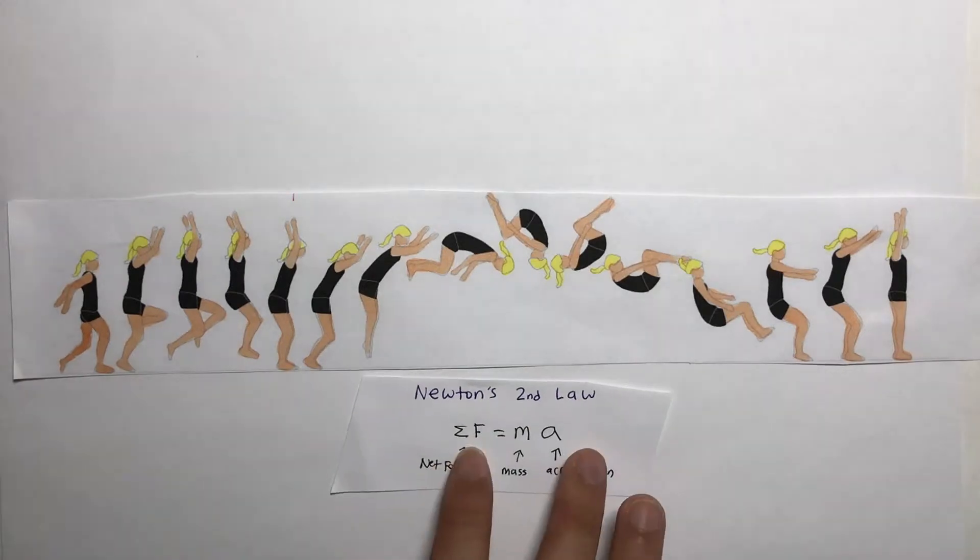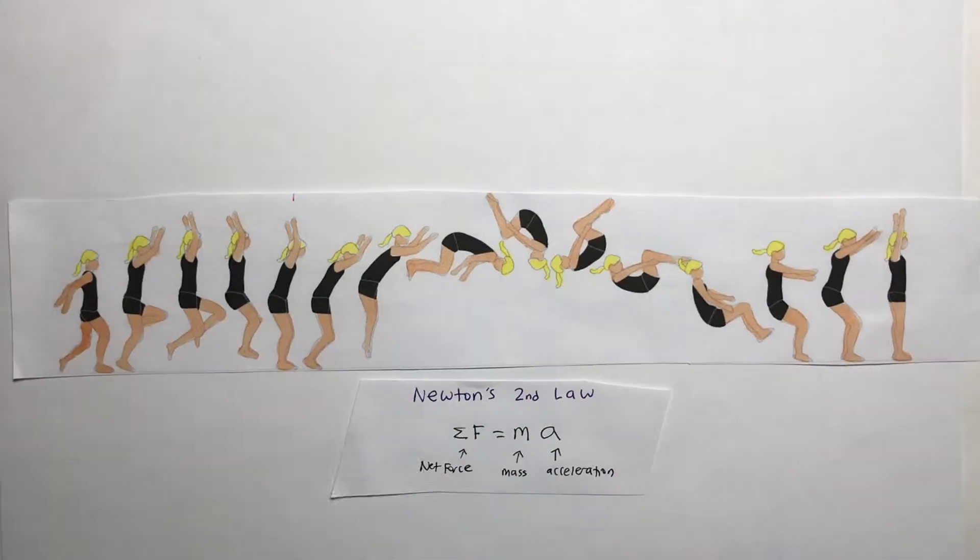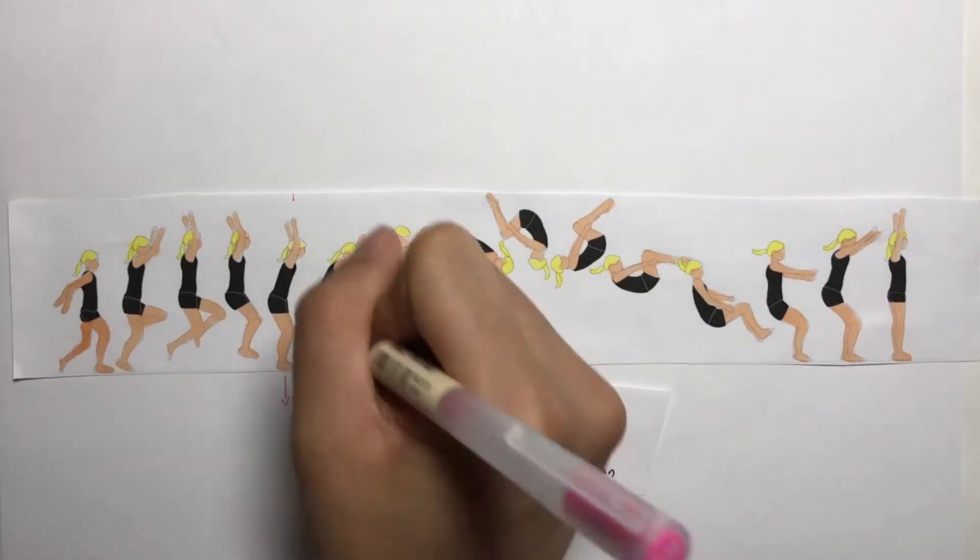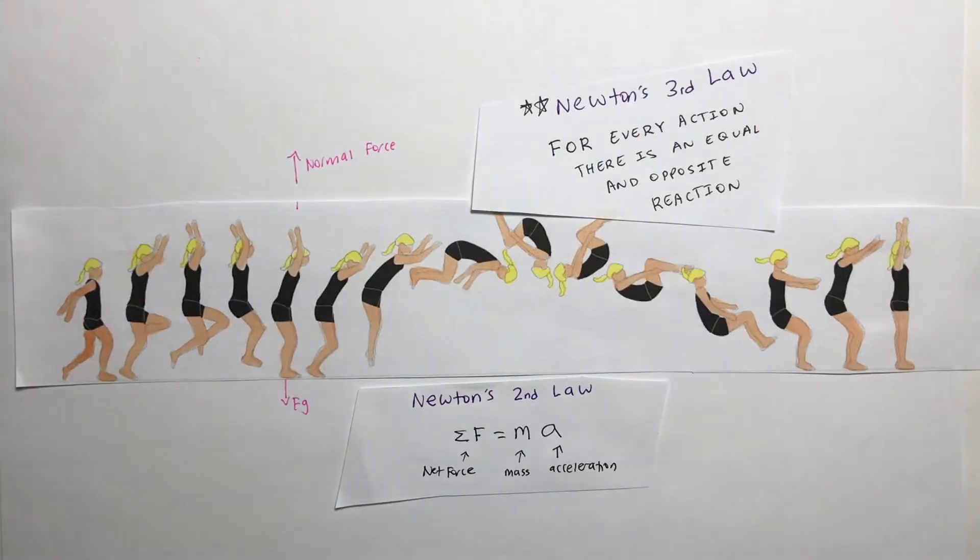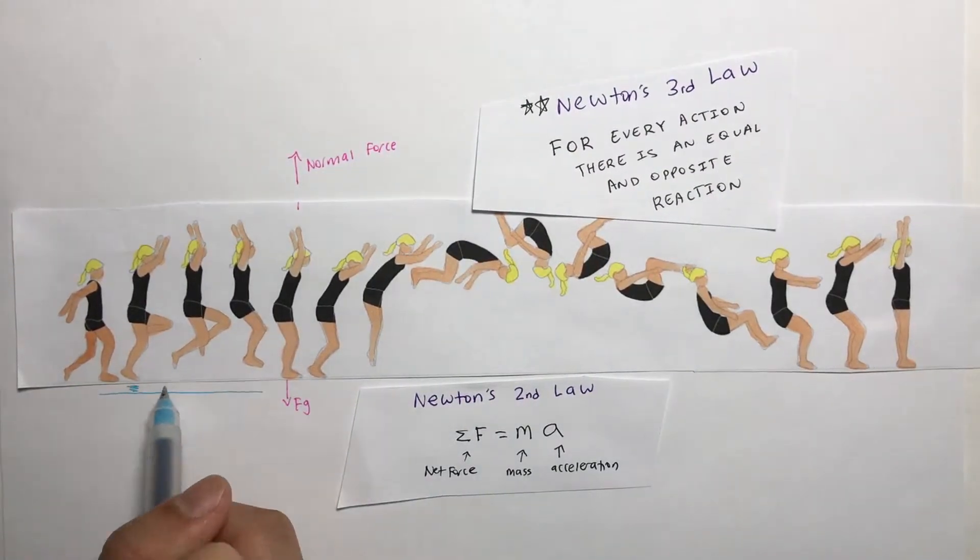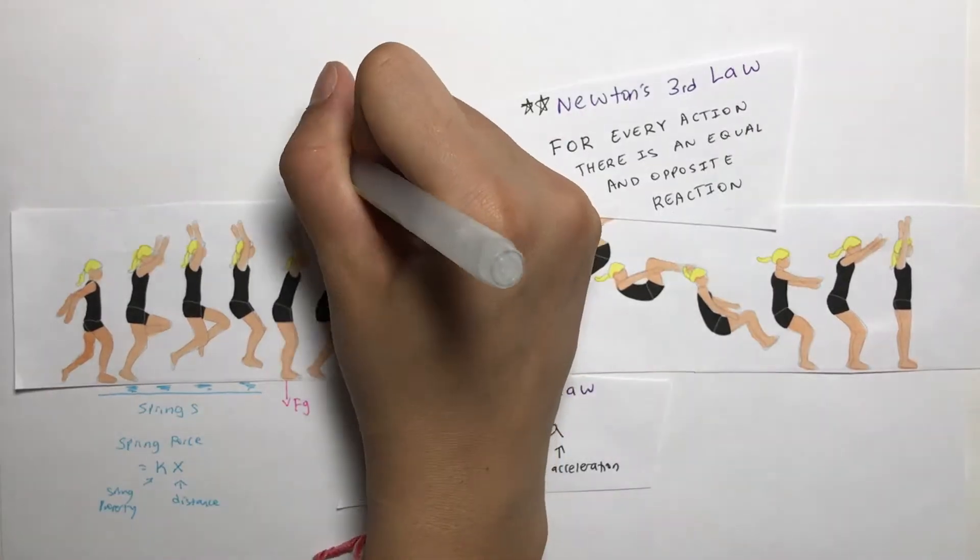Newton's second law says that net force is equal to mass times acceleration. When the gymnast hits the floor with a force, the floor hits her back with an equal and opposite force. This is Newton's third law. She can also go higher, though, because the floor is made of springs, which adds force in addition to gravity's.